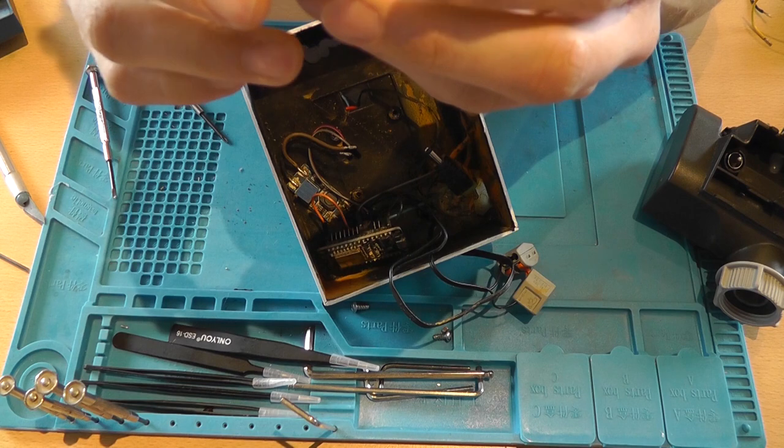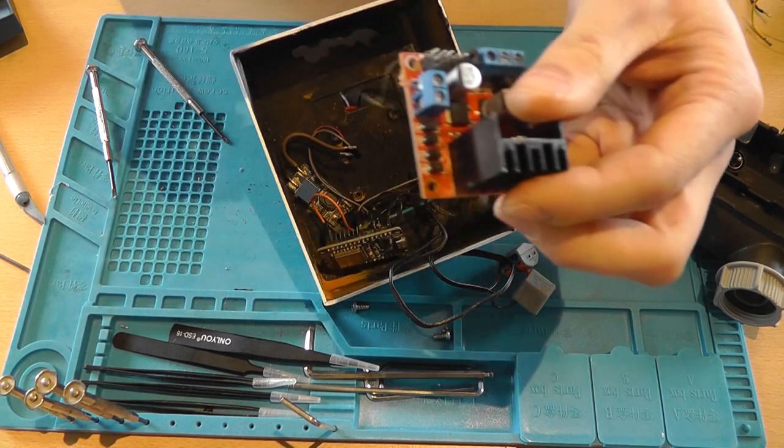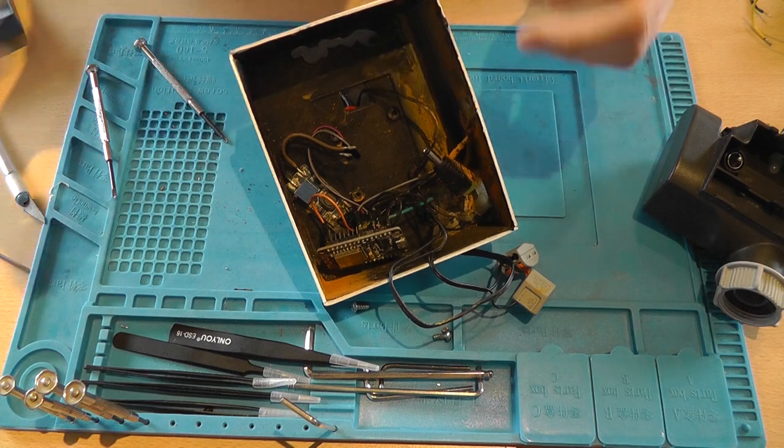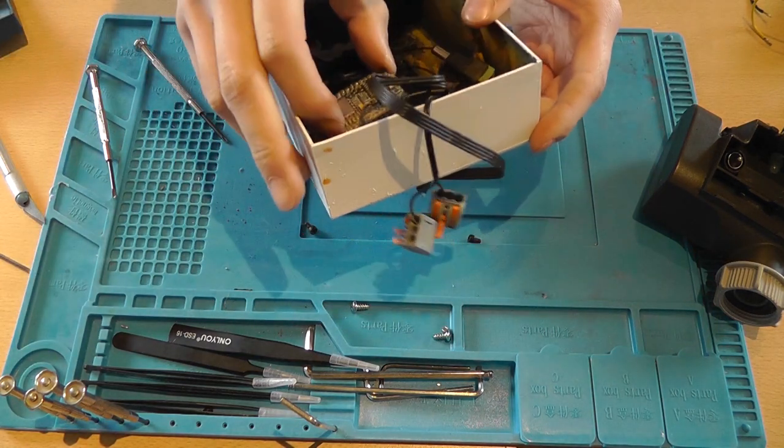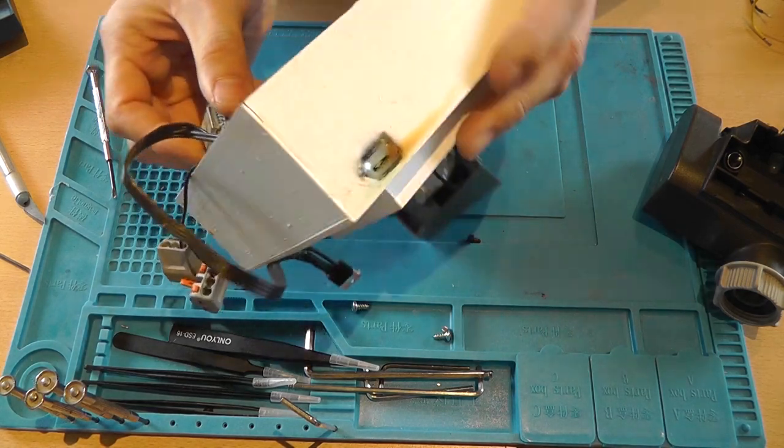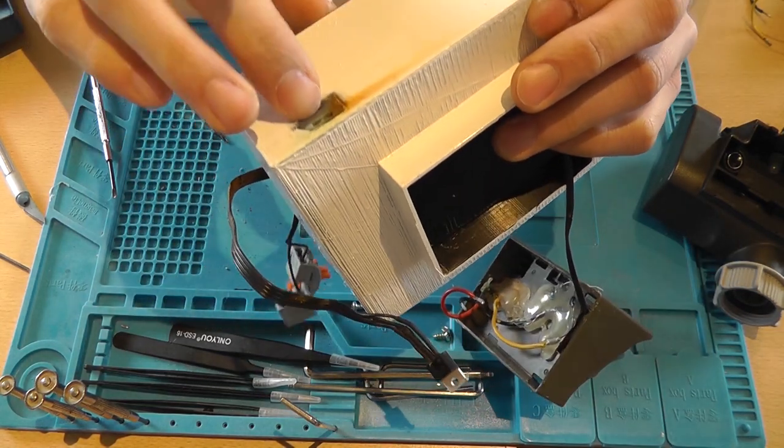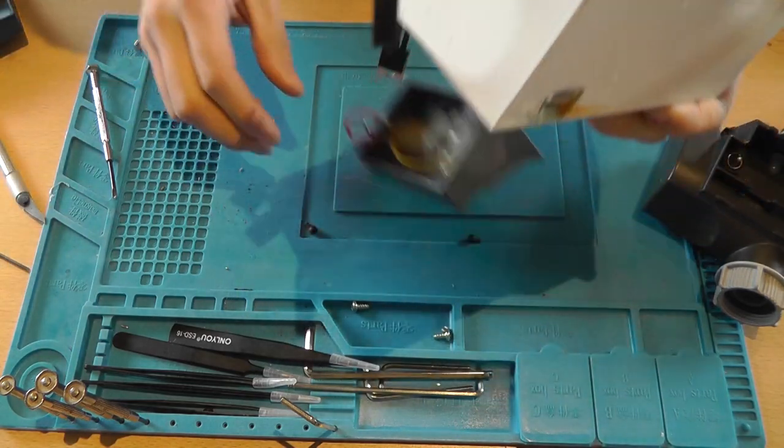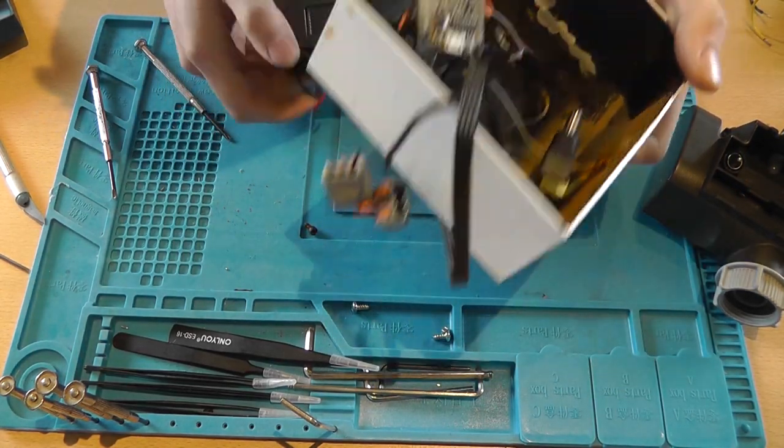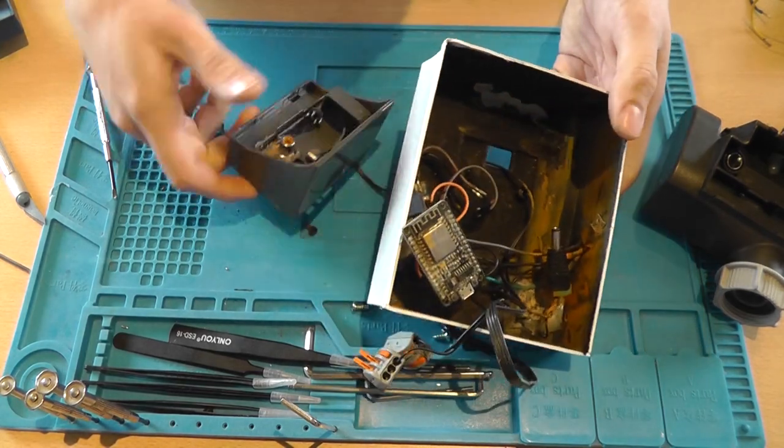This one looks okay, a couple of things here and there, but I suppose we can clean it up. Yeah, this is a total mess. I mean, you can see that the USB port is also very messy. That's the reset button.